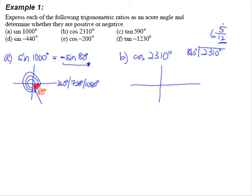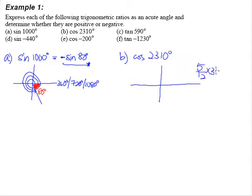After 6 full rounds, 5/12 of a round is left. Since one full round is 360 degrees, 5/12 of a round equals 150 degrees. So cosine 2,310 degrees is the same as cosine 150 degrees.